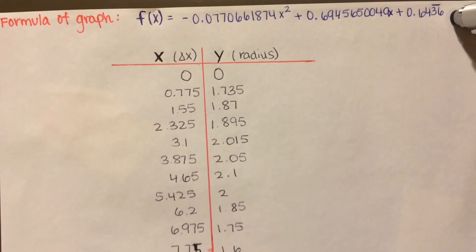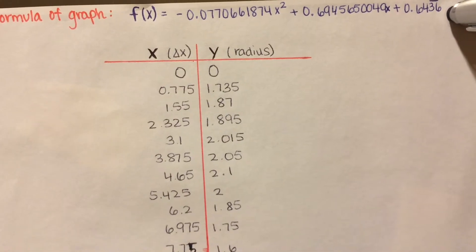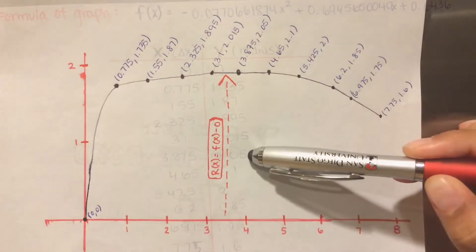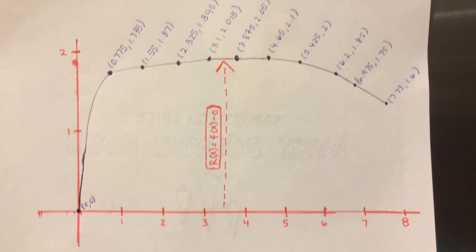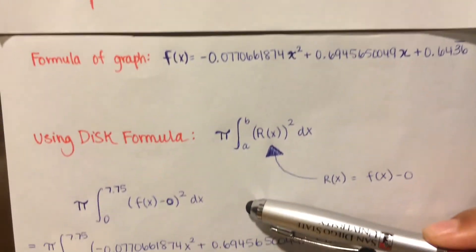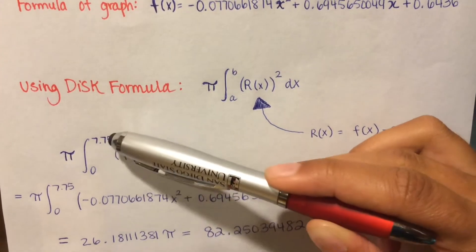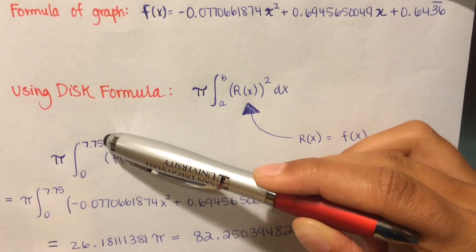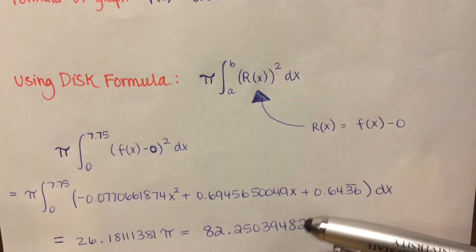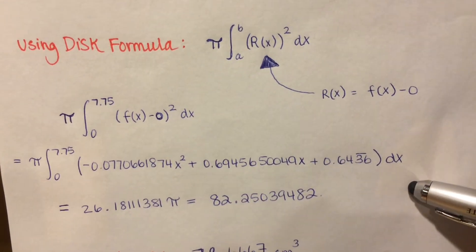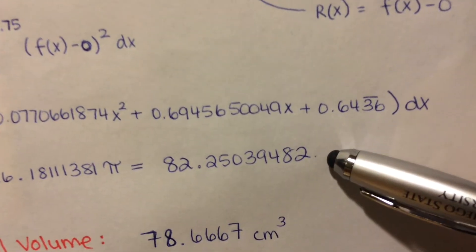We can now put f(x) in our disk formula to estimate the volume of this egg. This is our radius, which we are now ready to put into our disk formula. Our limits of integration are from 0 to 7.75, because that's the length of our egg. We then solved using a calculator, and this was our estimated value.